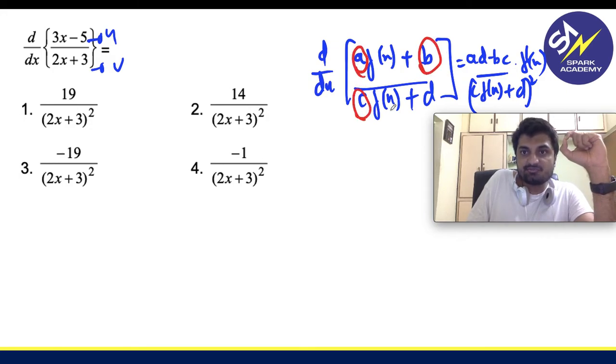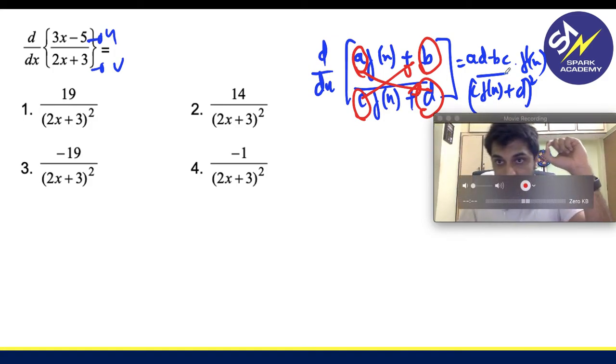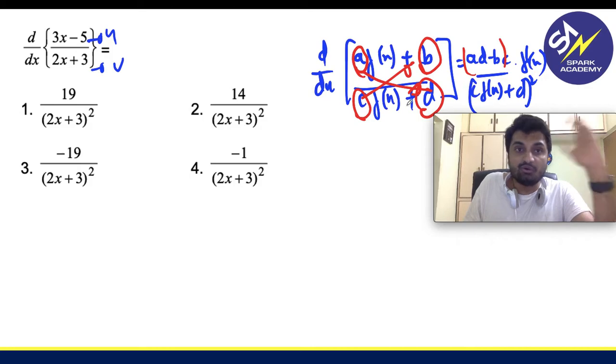Basically this is a, this is b, this is c, this is d. I just have to do cross multiplication of the coefficients or constants, subtracting them, dividing them with the denominator whole square into f dash of x. Now let's see how we can do this.